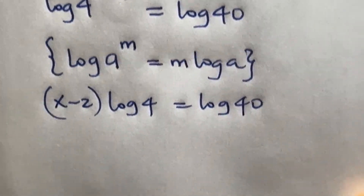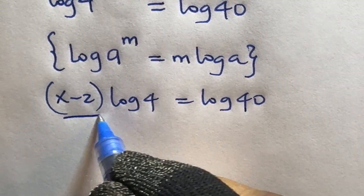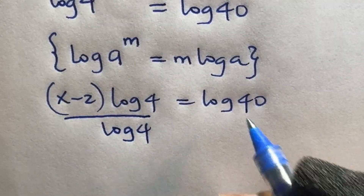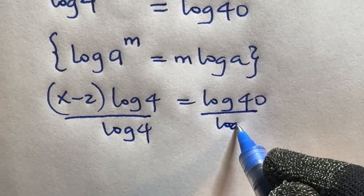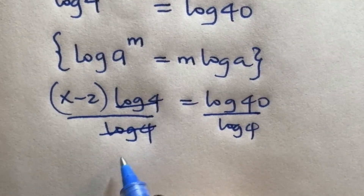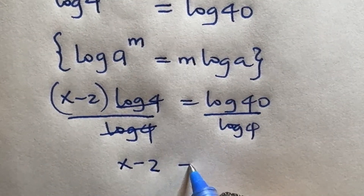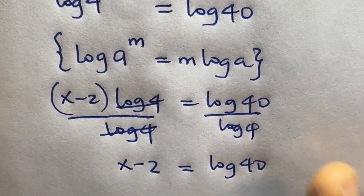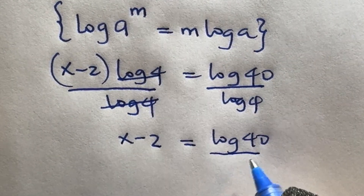Then we divide both sides by log 4, so all of this divided by log 4. This cancels, and we have x minus 2 is equal to log 40 divided by log 4.